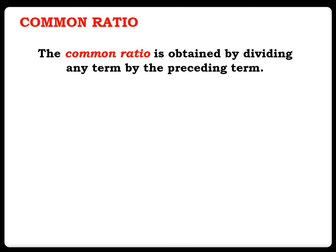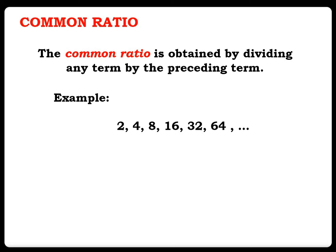The common ratio is obtained by dividing any term by the preceding term. Let us have this example: 2, 4, 8, 16, 32, 64.